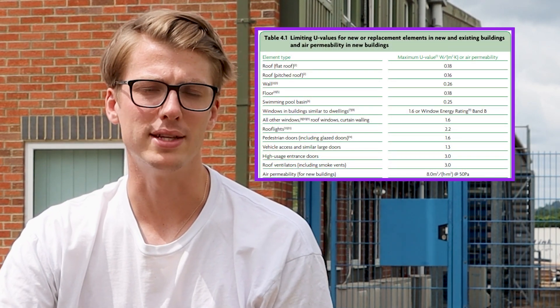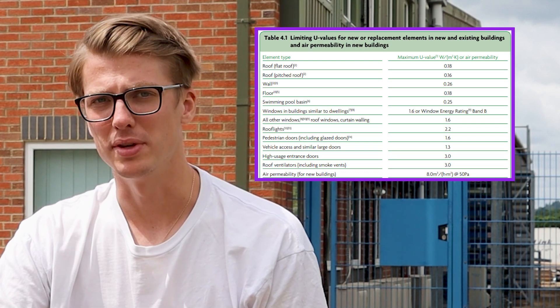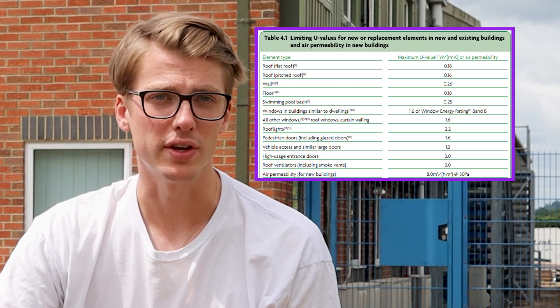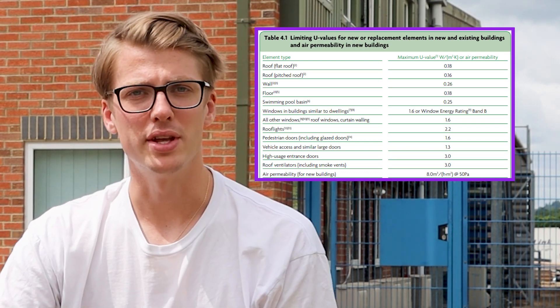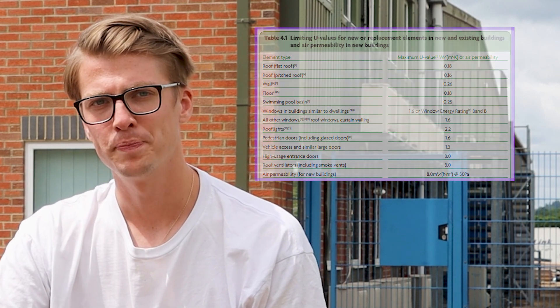Basically, the required U-value for smoke ventilators has dropped to 3 watts per square metre per Kelvin in the new version of this document, from a previous 3.5. The lower the number, the stronger the product's thermal properties. This may seem like a minor change, but it's important to stay on top of the correct documentation to make sure products remain compliant.